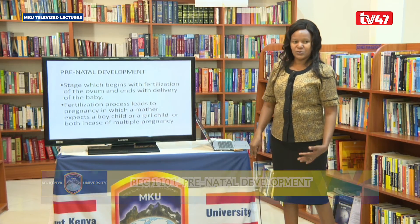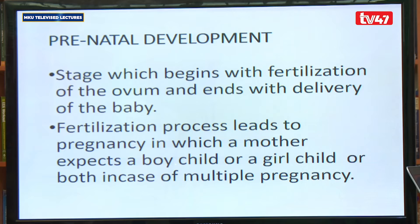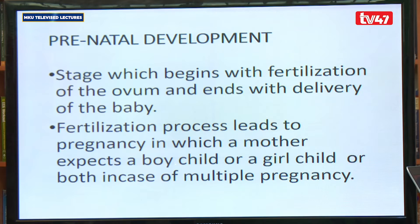In some instances a woman may release more than one egg — two or three — all of which become fertilized. We also have instances in which the fertilized egg may divide during the early stages of development, leading again to twins. Those kinds of twins we refer to as identical twins. Identical twins are usually made up of the same genetic material and for that matter they end up being of the same sex.